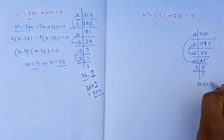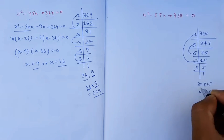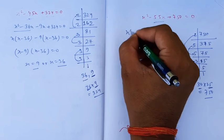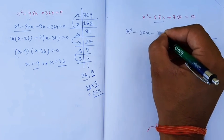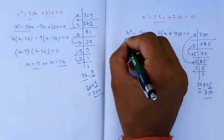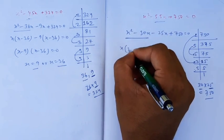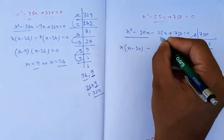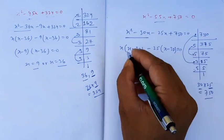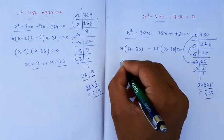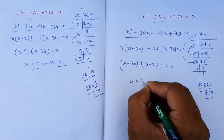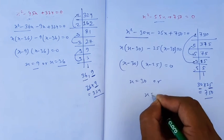So factoring x² - 30x - 25x + 750 = 0 gives us (x - 30)(x - 25) = 0, thus x = 30 or x = 25.